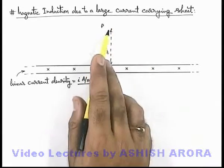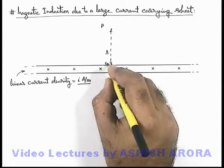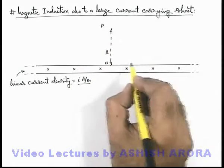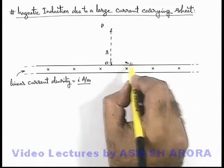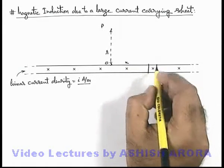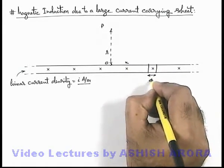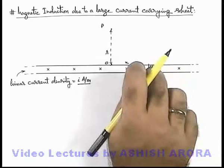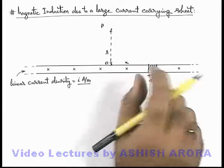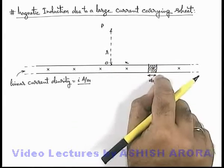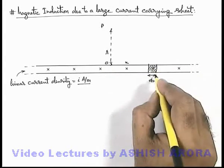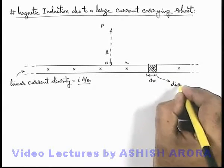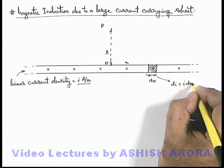Then to find out the magnetic induction at P, from this point O which is on the sheet, right perpendicular to point P, at a distance x from point O we consider an element of width dx. And this element of width dx will be considered as a long wire, which is of width dx located on the sheet. So the total current carried in this element can be written as di which is equal to i dx.